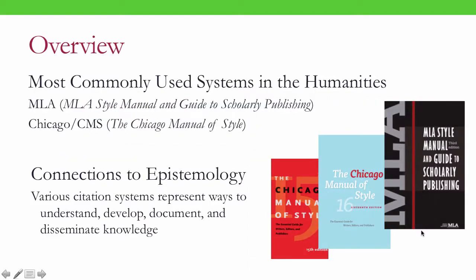To get an overview first of citation in the humanities, there are two most commonly used systems. The first is the MLA system — MLA is an acronym for the Modern Languages Association. The other commonly used system is the Chicago, or CMS, system. All of the systems are pretty subtle and complex, but in this video I will try and cover some of the basics.